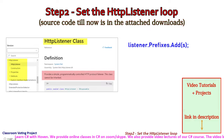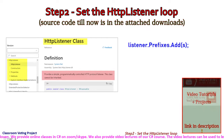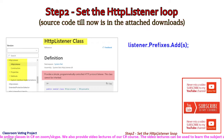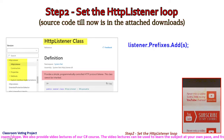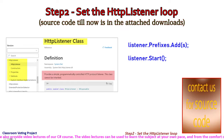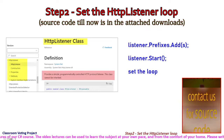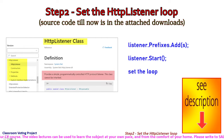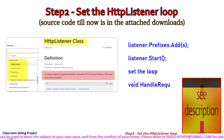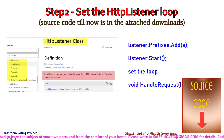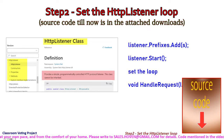First, we have to add the listening routes to the prefixes collection. Wildcards are also supported, as you will come to know about in a moment. After that, the listener is put into started mode and a while loop is set to handle the requests. We have to provide an async callback delegate to handle a request and write the response to the output stream.